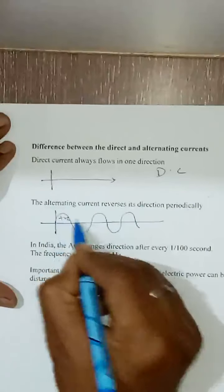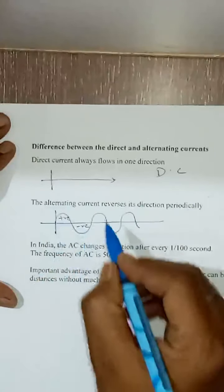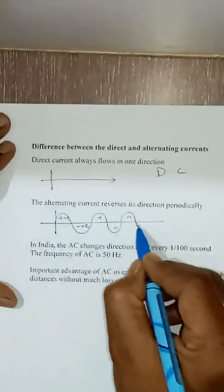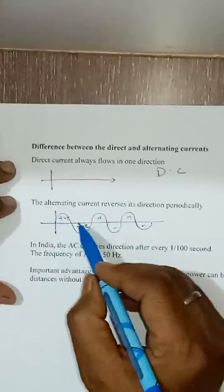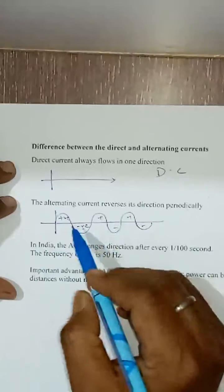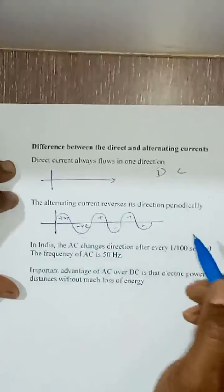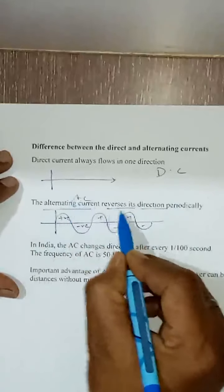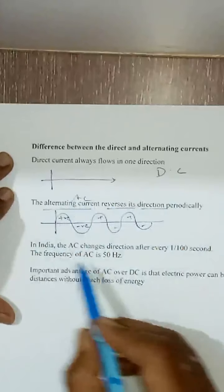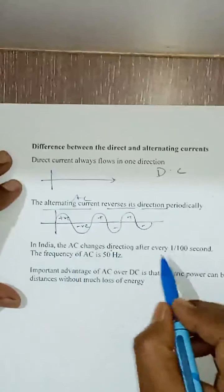So this part is positive and this part is negative, positive negative positive negative. So as you are seeing, it is changing its direction, positive negative positive negative, up down. So it reverses its direction, alternating current. That means AC reverses its direction.